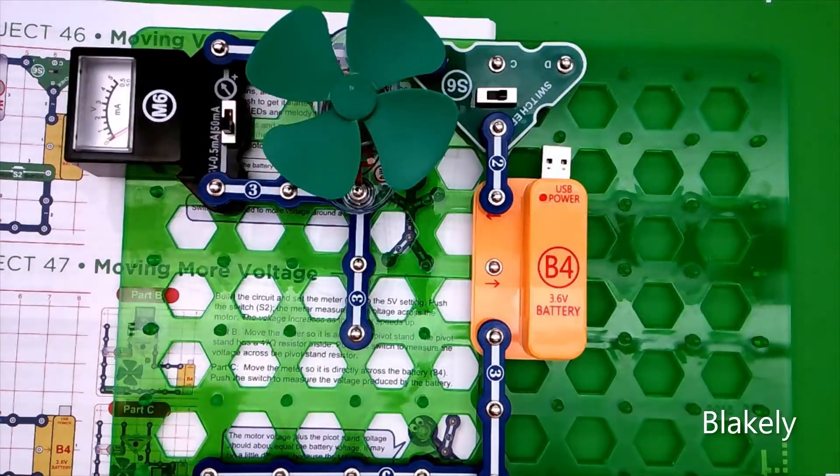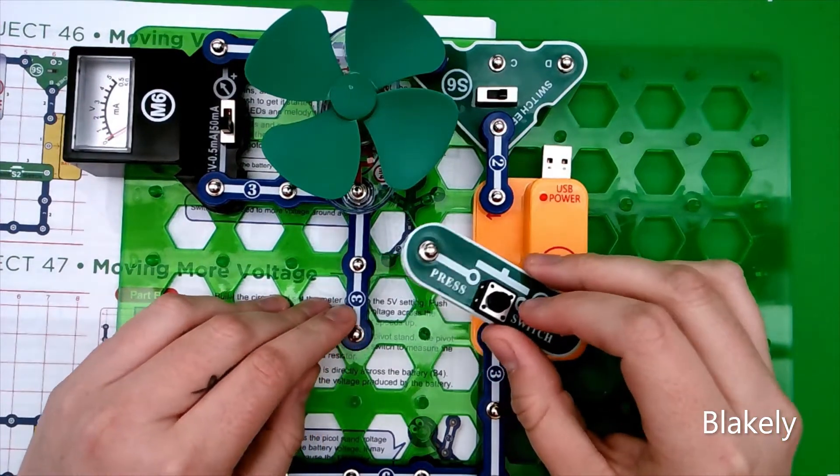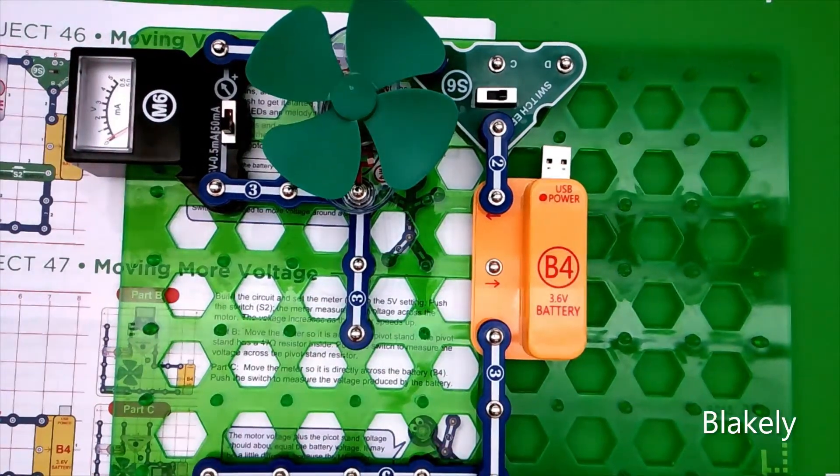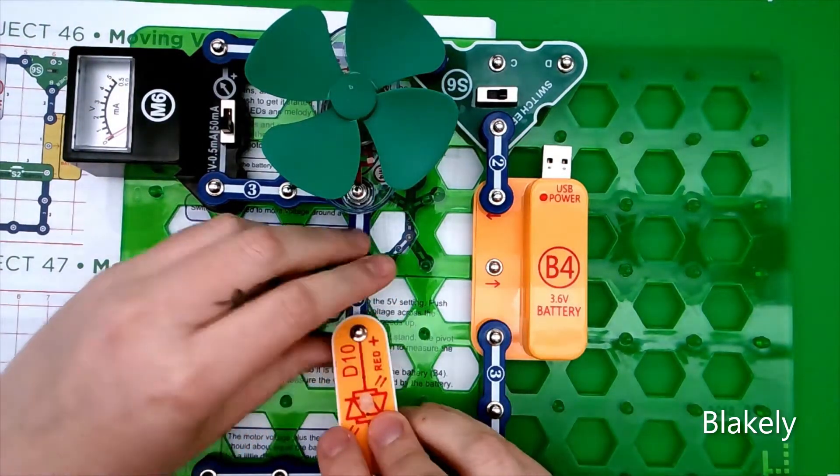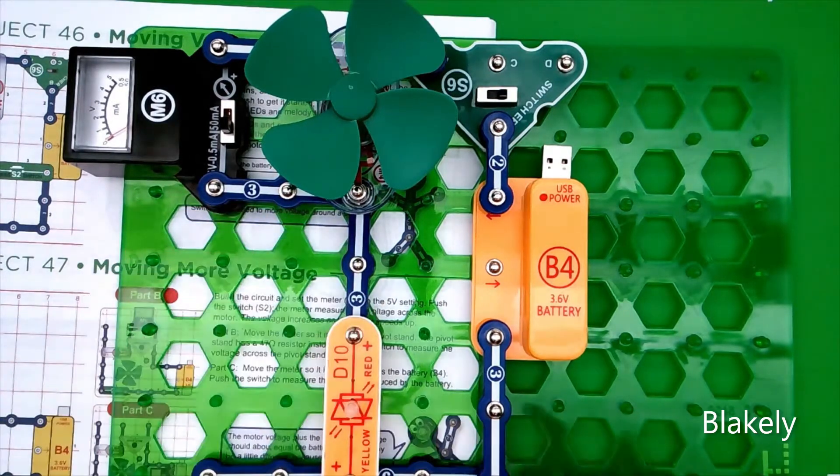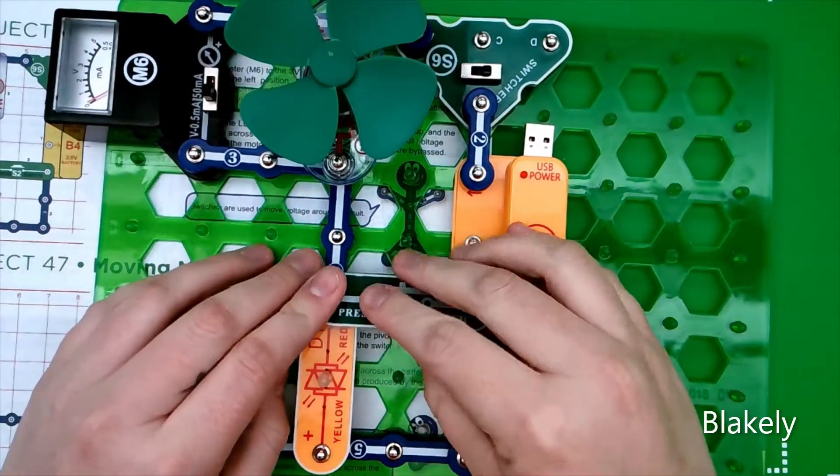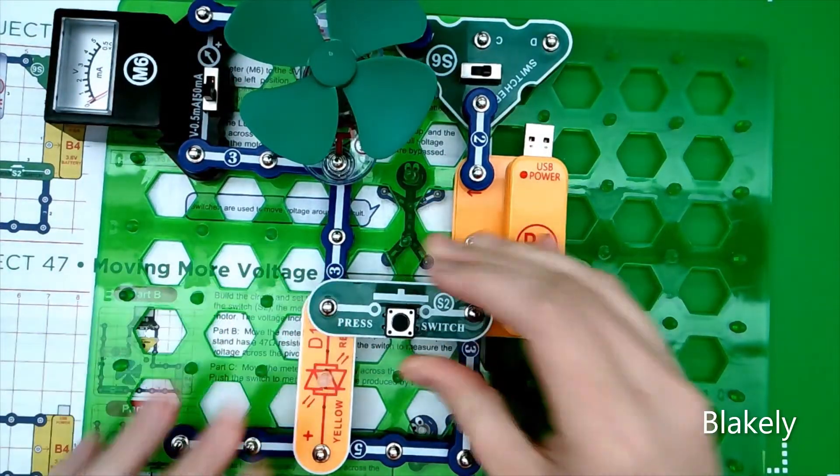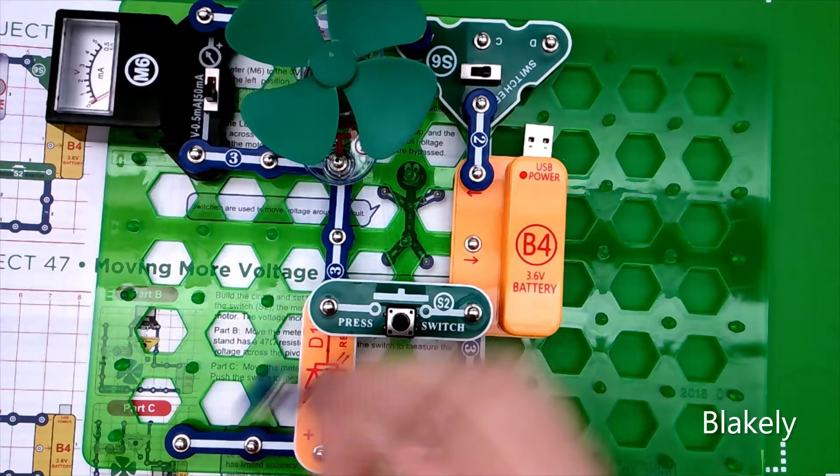Now I'm going to take the yellow which is the V10 and put it right here like that, so the S2 press switch will fit on top of it like that.